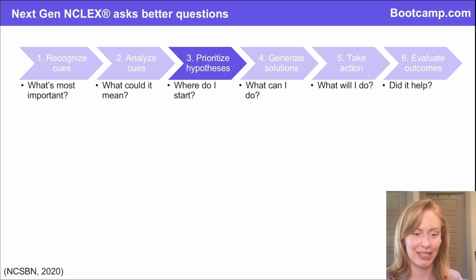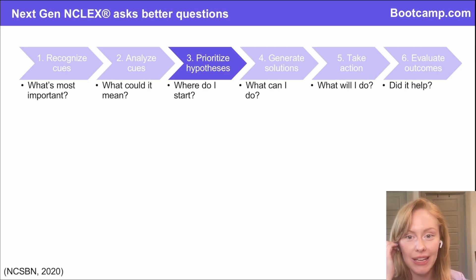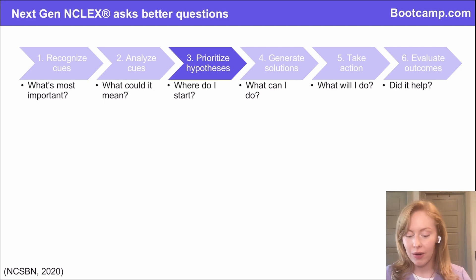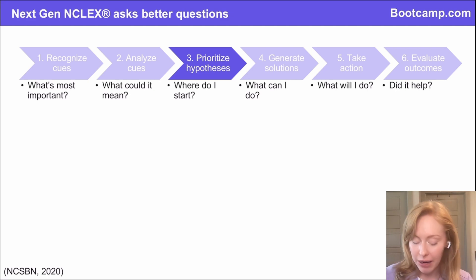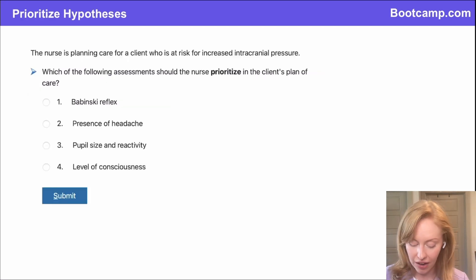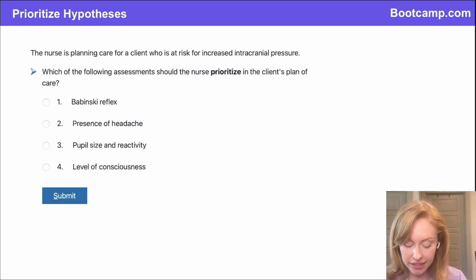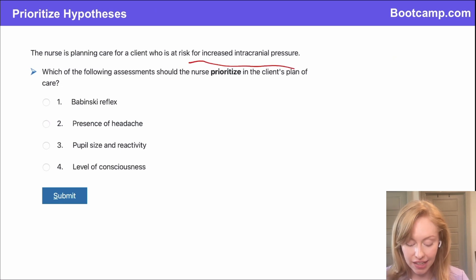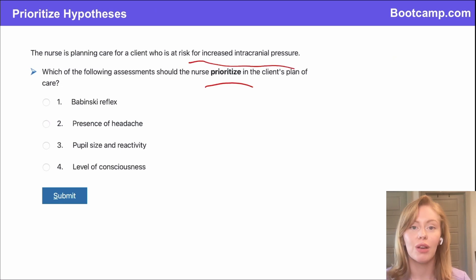Tenzin — I remember you from last week — increased ICP, correct. So that's our priority in this patient, and we need to figure out, as we're monitoring for that, someone who's at risk for increased ICP, which of these assessments does the nurse need to prioritize?